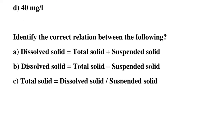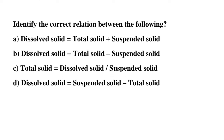Next question: identify the correct relation between the following. Option A: dissolved solids = total solids + suspended solids. Option B: dissolved solids = total solids − suspended solids. Option C: total solids = dissolved solids ÷ suspended solids. Option D: dissolved solids = suspended solids − total solids. The correct answer is option B: dissolved solids = total solids − suspended solids.